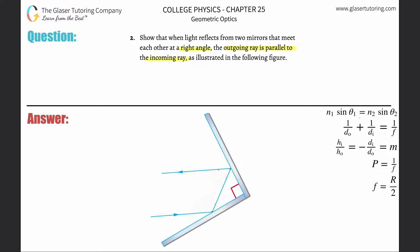I'm going to call this angle theta one — this whole thing theta one — and let's call this whole thing theta two. In order for these two lines to be parallel to each other, theta one plus theta two has to equal 180 degrees. Now let's start adding in some other angles.